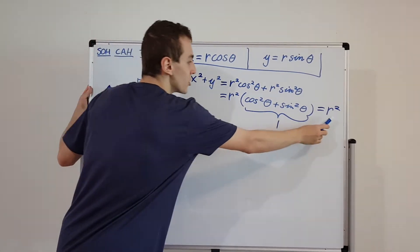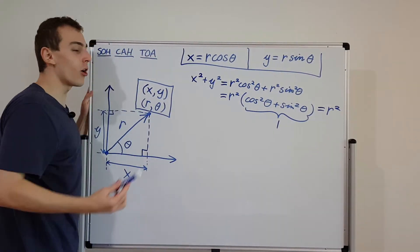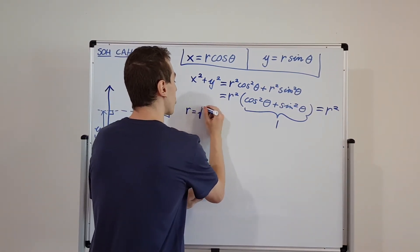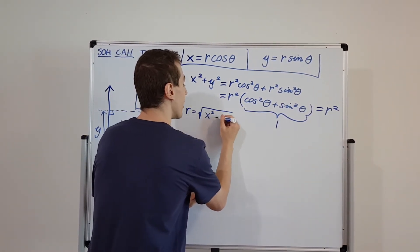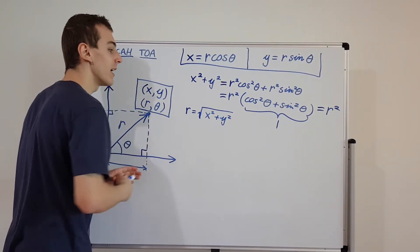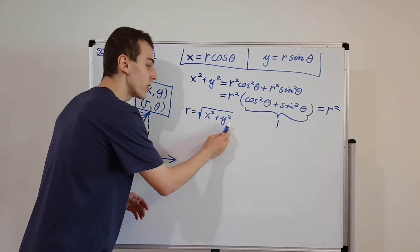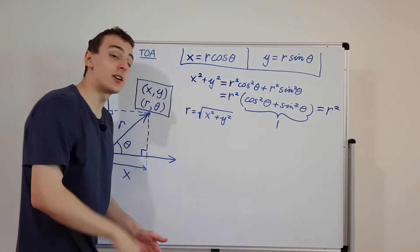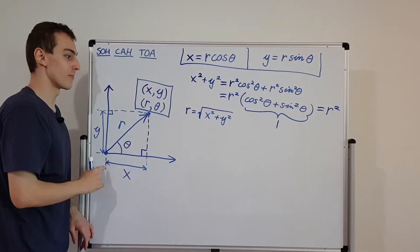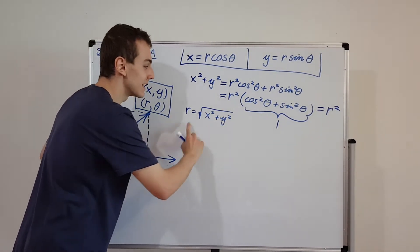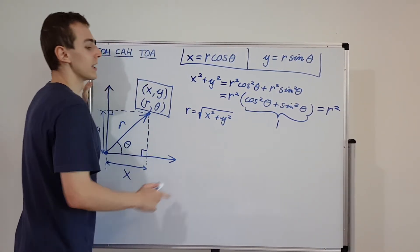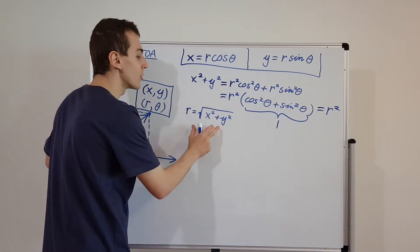We have verified Pythagoras' theorem for these definitions. x squared plus y squared equals r squared. What is r then? Taking the square root of both sides, r equals the square root of x squared plus y squared. So if you know your x and y, you square those two values, add them together, and take the square root — that gives you the radial distance from the origin. Sometimes this is called the Euclidean distance, and it's just a rearrangement of Pythagoras' theorem.